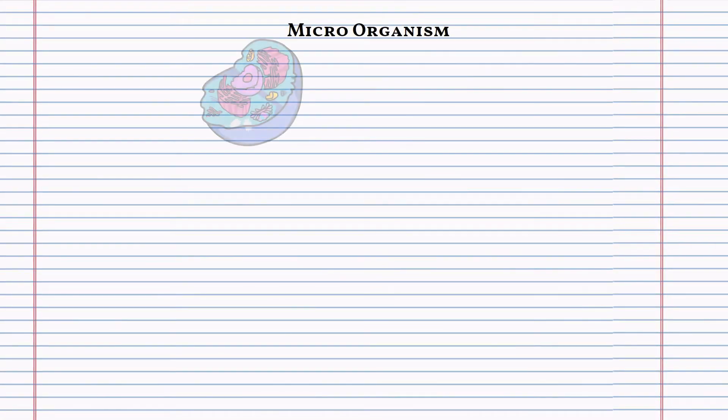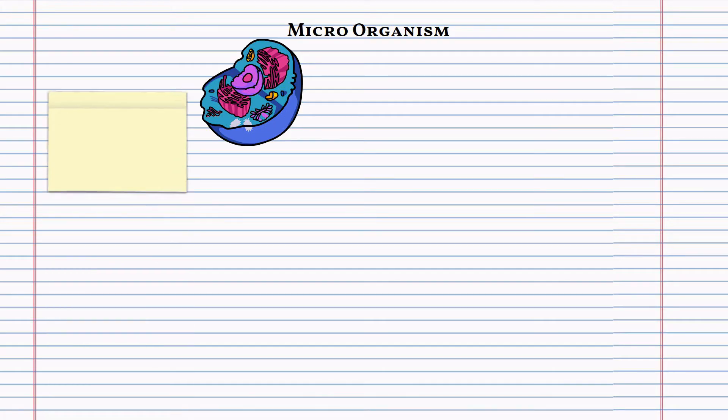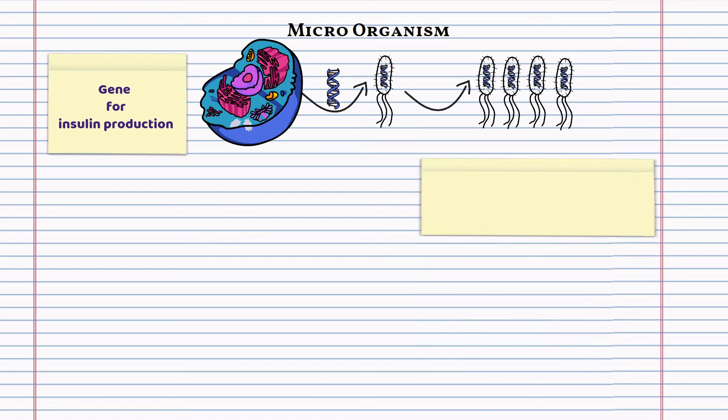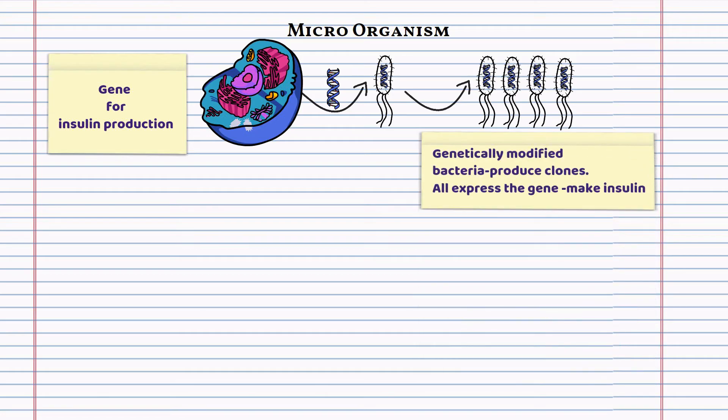Let's take a look at how a microorganism is genetically engineered to produce a useful product. Let's think about insulin production. The gene for insulin production was isolated from a human cell and it was inserted into a bacterium. That bacterium was now genetically modified and produced many identical clones. Each one of these clones now had the gene for insulin production and expressed it. This is how insulin is produced for type 1 diabetics in bioreactors.